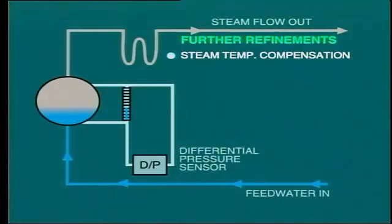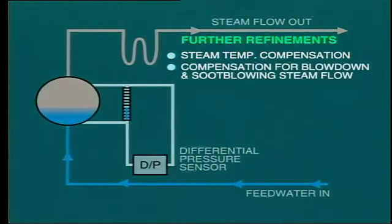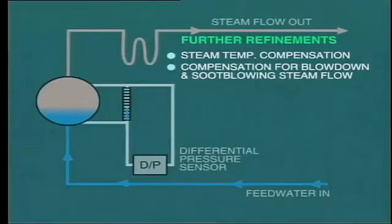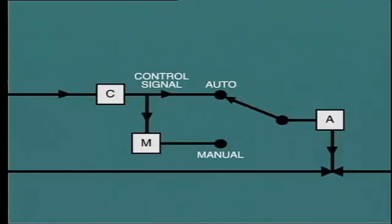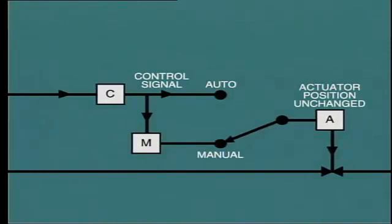Yet further refinements may be made to the water level control system, such as steam temperature compensation to provide more accurate measurement of steam flow, and compensation for blowdown and soot blowing steam flow when comparing output steam flow to input feed water flow. You must make sure to thoroughly learn the automatic control systems installed on your boilers. One very important feature of any control system is that it must provide smooth transfer from automatic to manual operation and vice versa. In most systems this is achieved by making the alternative selection continuously follow the actual output signals to the actuators, so any switching keeps the actuator in the same position until further change is made.